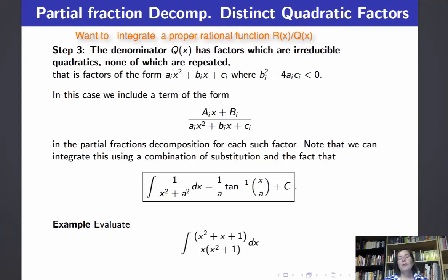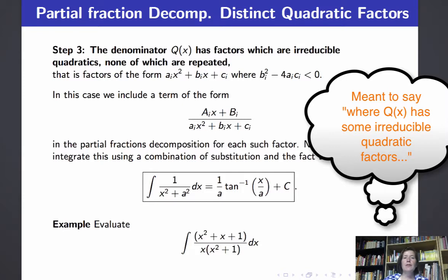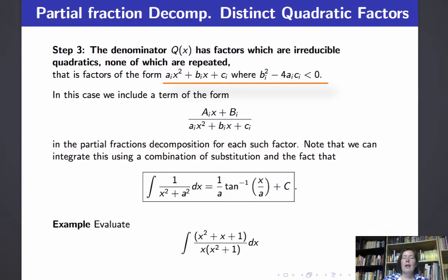Let's look at the situation where we want to integrate a proper rational function r(x) over q(x) which has some irreducible quadratic factors, none of which are repeated. We're looking at factors of the form a_i x² + b_i x + c_i where b_i² - 4a_i c_i is less than zero. For each of these distinct irreducible quadratic factors we include a term with an unknown linear polynomial in the numerator and the irreducible quadratic factor in the denominator. All of these terms can be integrated using a combination of substitution and the integral for tan inverse by completing the square.